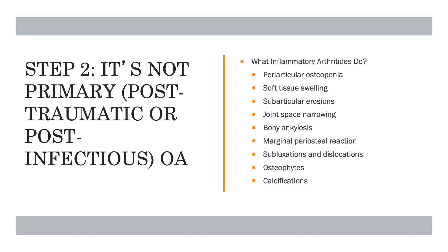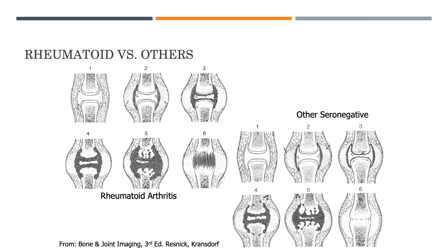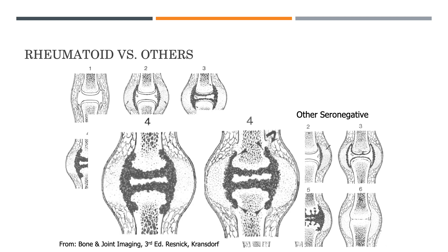From Resnick and Kranzdorf's chapter, the main difference between rheumatoid and other inflammatory arthritis lies in the periosteal reaction. Other seronegative arthritis show a periosteal reaction, whereas rheumatoid arthritis does not. Looking at stage 4 of both diagrams, seronegative arthritis shows a periosteal reaction right next to the upper end of the synovitis, which helps differentiate rheumatoid from other arthritis.